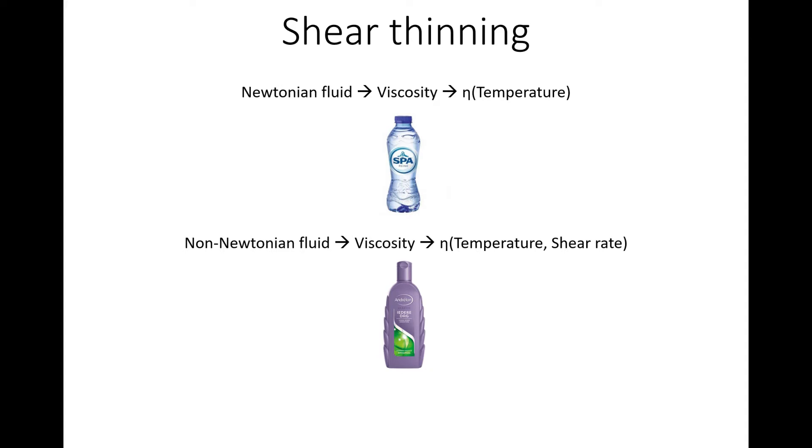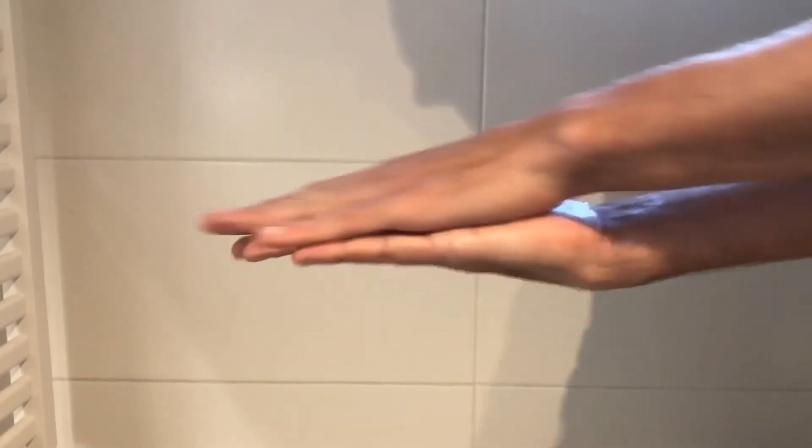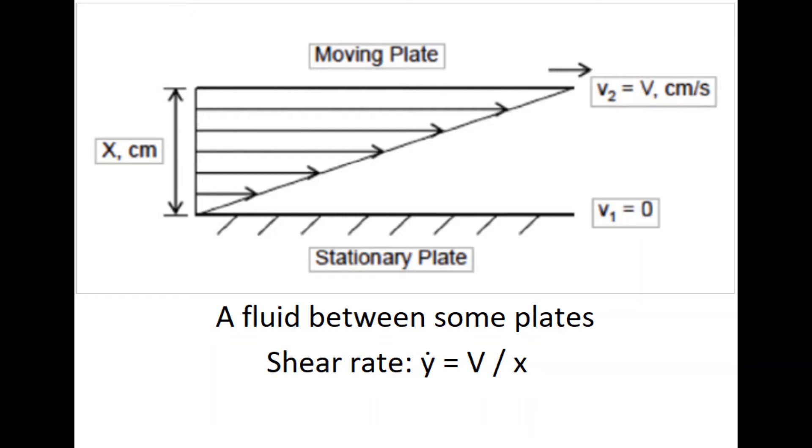A shear rate exists when a shear force is applied to a fluid, like as shown here. The shear rate is defined by the difference in velocities between two layers of a fluid divided by the distance between those layers. A fluid is shear thinning if the viscosity decreases as the shear rate increases.